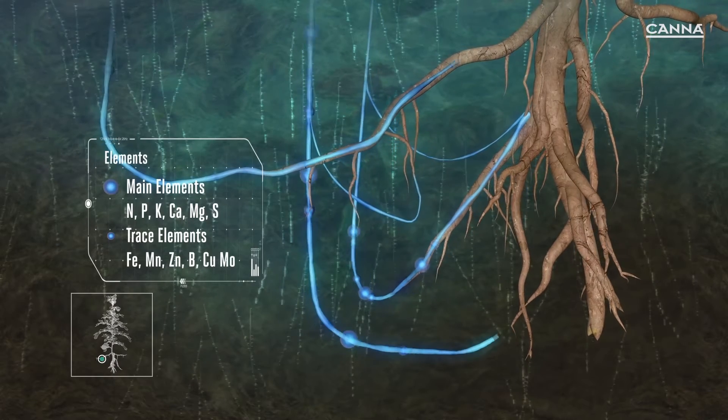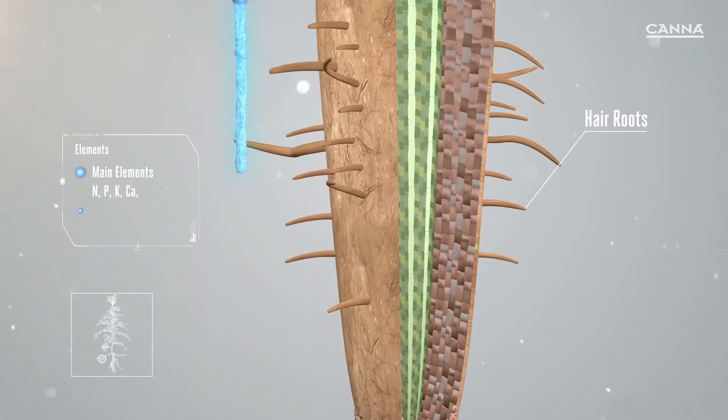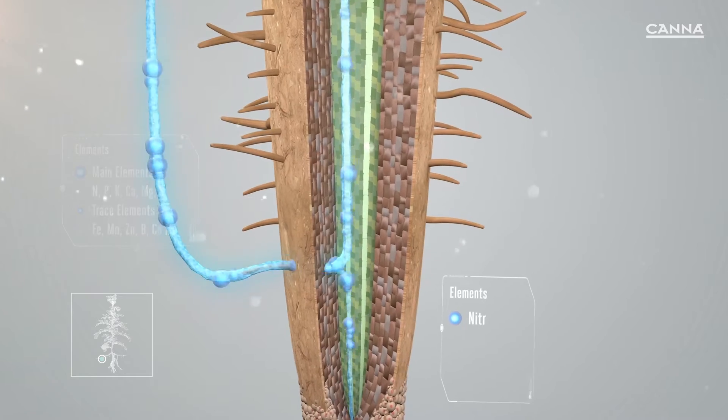When you feed a plant, the roots will absorb the nutrient via the inert substrate in the pot. This will then spread to every part of the plant.